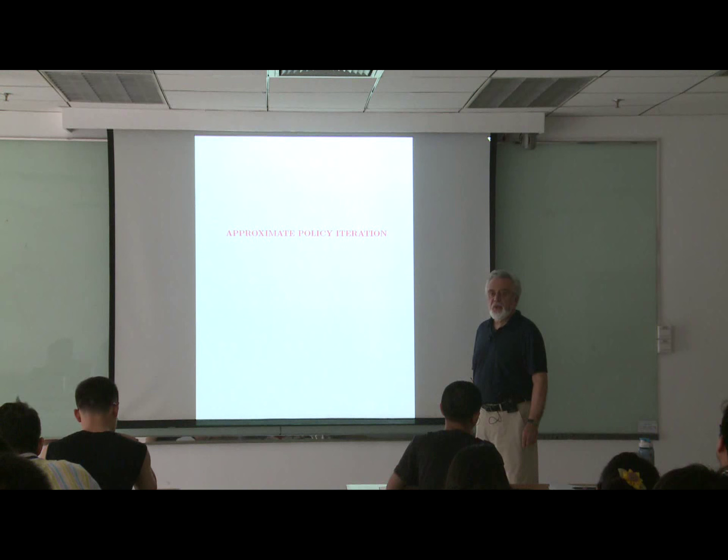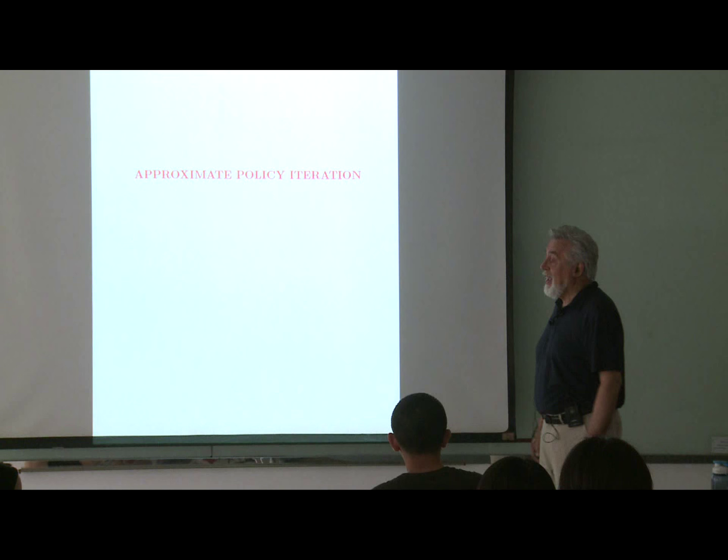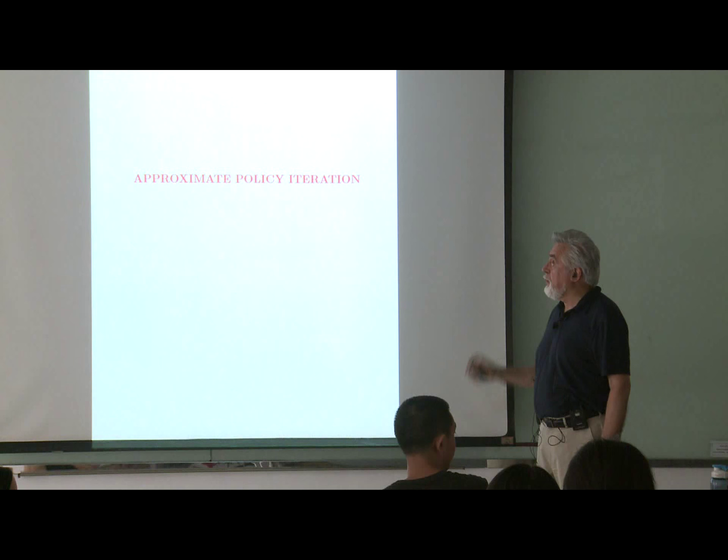We have been talking about the approximations to the two basic methods for discounted infinite horizon problems: value iteration and policy iteration. We saw the approximate version of value iteration. Now let's go into an approximate version of policy iteration.